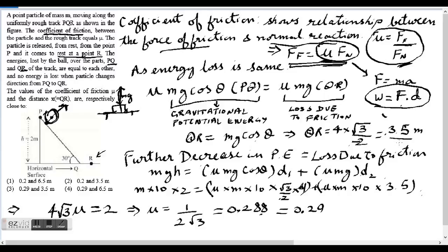The particle is released from rest from the point P and it comes to rest at point R. The energy lost by the ball over the parts PQ and QR of the track are equal to each other, and no energy is lost when the particle changes direction from PQ to QR.